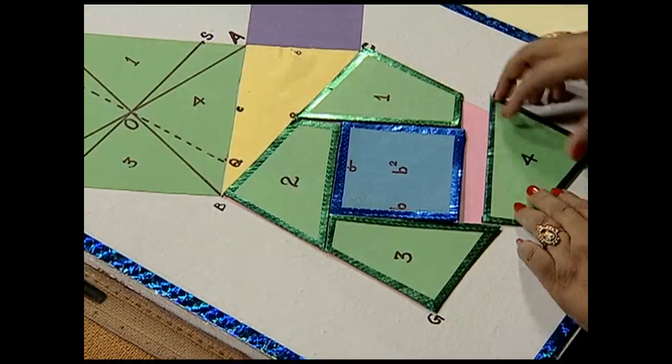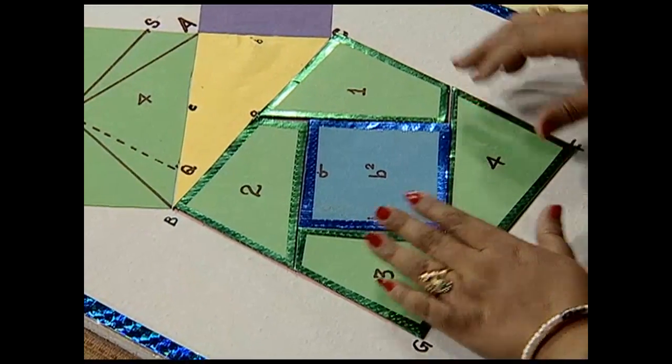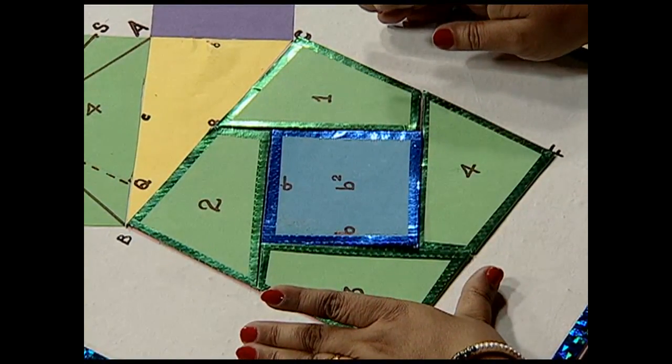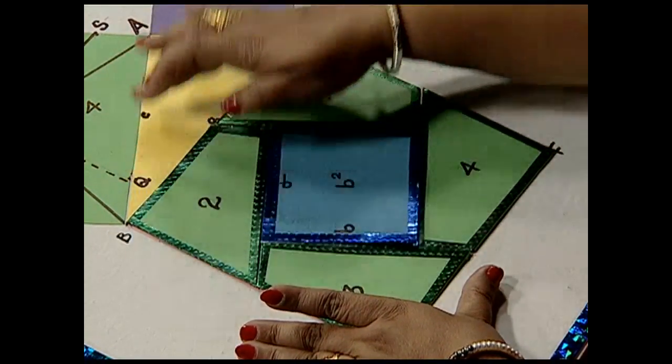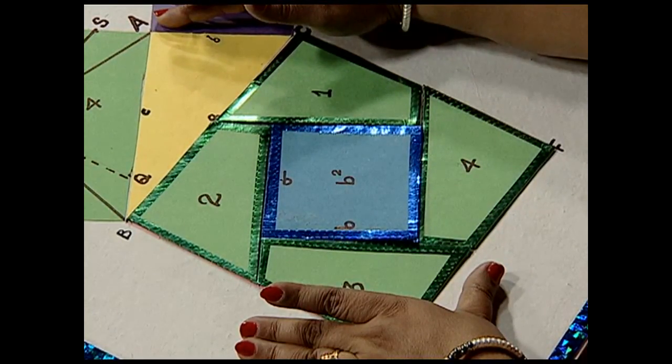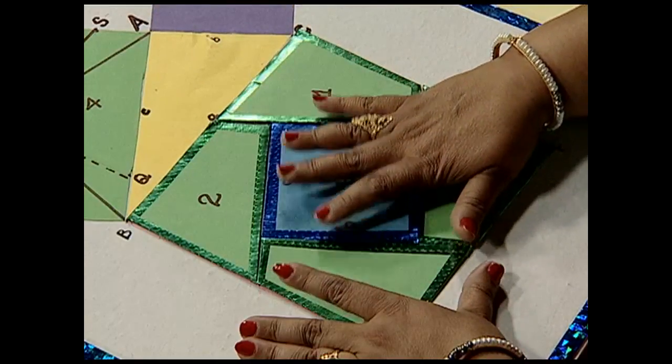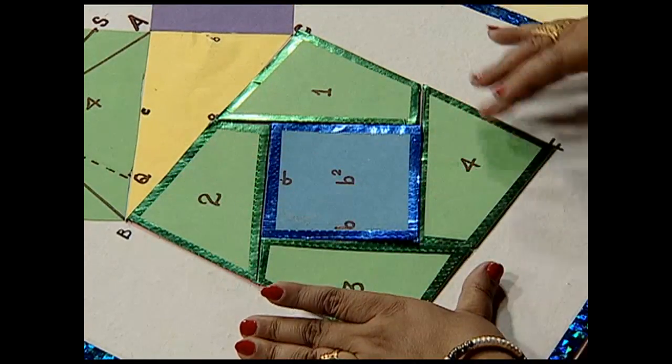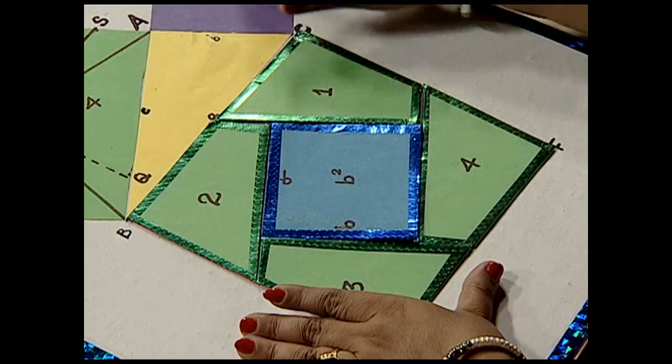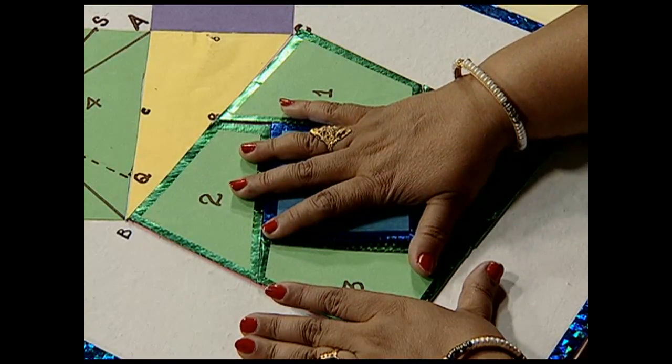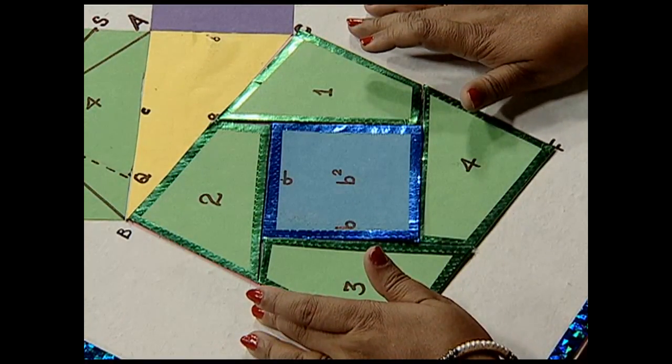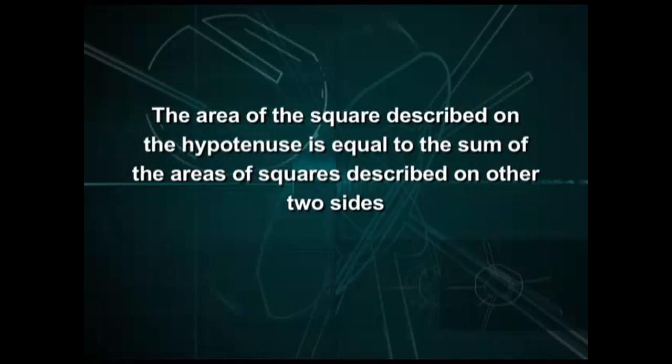This is a third quadrilateral and this is a fourth quadrilateral. Yes, what do you observe? We observe that the squares on the other sides of a right triangle are equal in area to the square described on the hypotenuse. These four quadrilaterals and the square completely overlap a square BCFG, thus verifying our result.